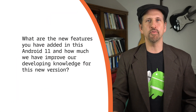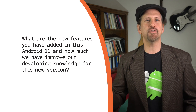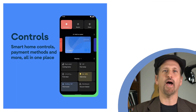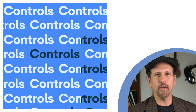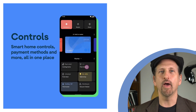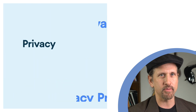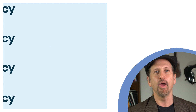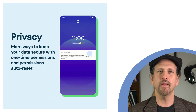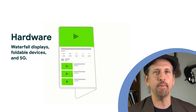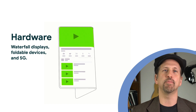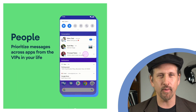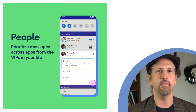What are the new features you've added in Android 11, and how much do we have to improve our developing knowledge with this new version? Well, there's a ton of cool stuff in Android 11: device and media controls, new privacy features, better support for displays that wrap around device edges, foldable devices and 5G, conversations and chat bubbles, voice access, and more. Developers should pay close attention to app behavior changes, as these can prevent your app from working properly. For more on all of this, check out our 'What's New in Android 11' video and the Android 11 Beta blog post.